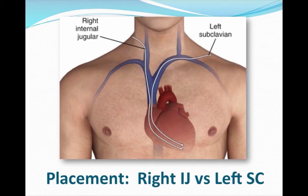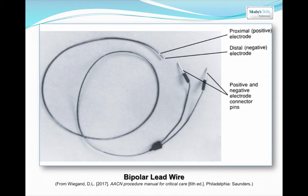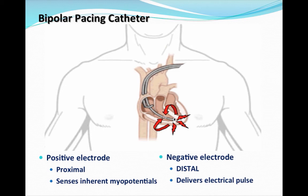We want to leave the left subclavian for permanent pacemakers, but it's also an option. The bipolar lead wire has at its distal end the distal negative electrode, and a few centimeters up is the proximal or positive electrode. The positive electrode senses the inherent myopotentials — what's going on in the heart — while the negative distal electrode delivers the electrical impulse to the right ventricle or endocardium when needed.